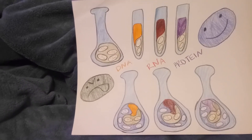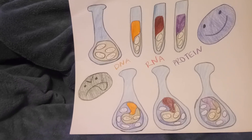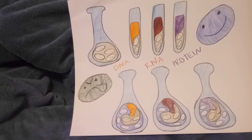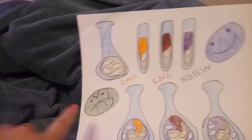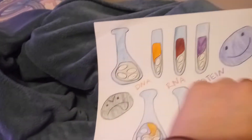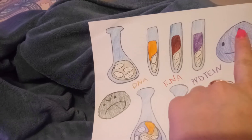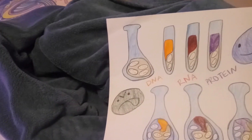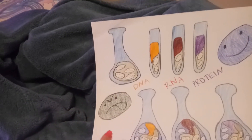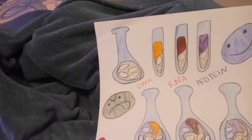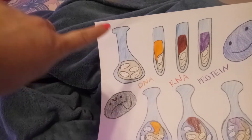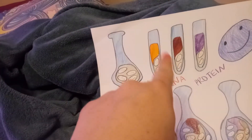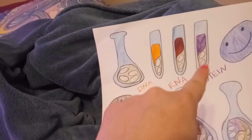In the transformation principle experiment, there is a virulent and a non-virulent form of streptococcus. The virulent strain of streptococcus was grown, killed, and then subjected to three different treatments.